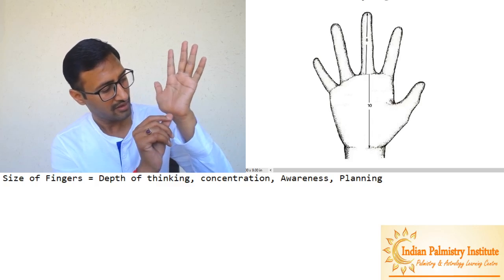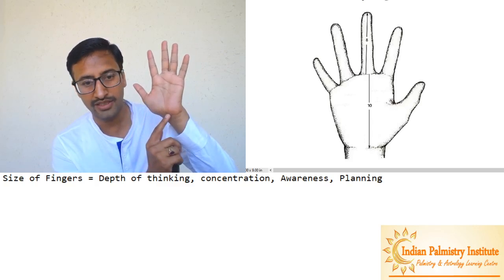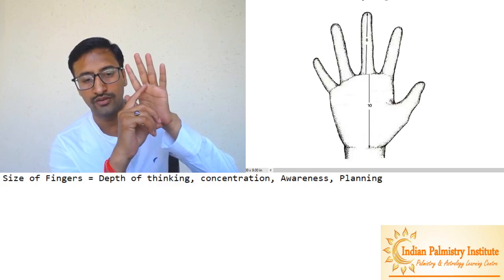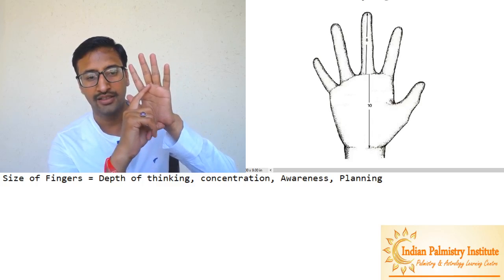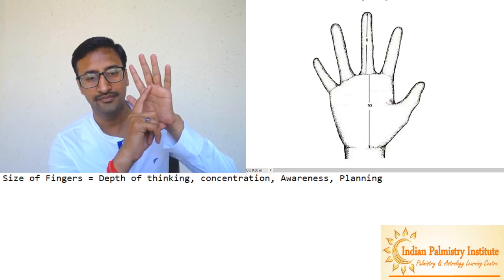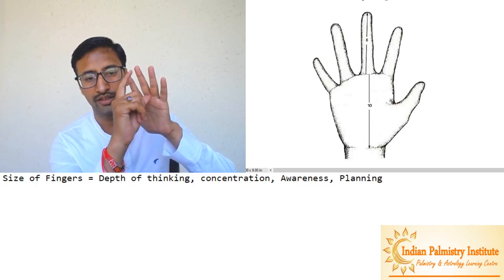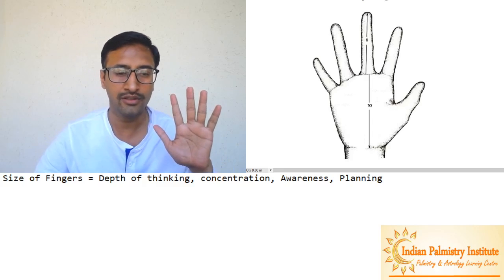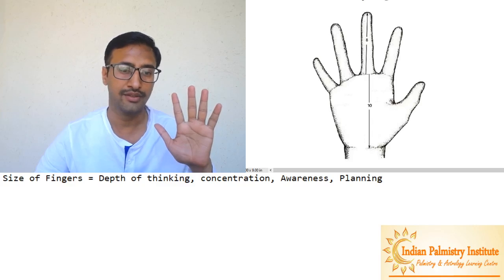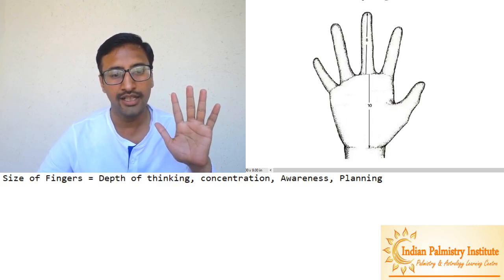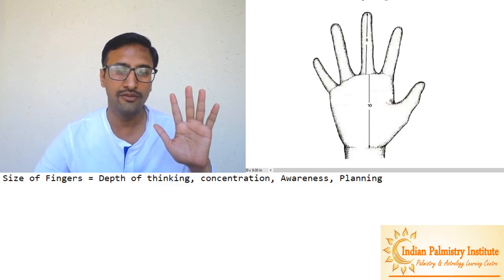You can check in your hand - look at the bracelet line, first bracelet line here, and from here to the base of the middle finger, this is the length of the palm. And from the base of middle finger to the top of middle finger, this is the length of your fingers.